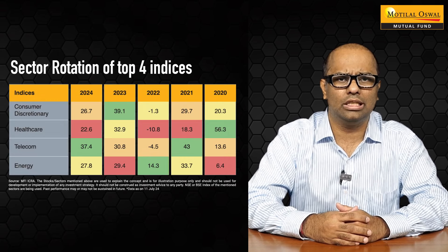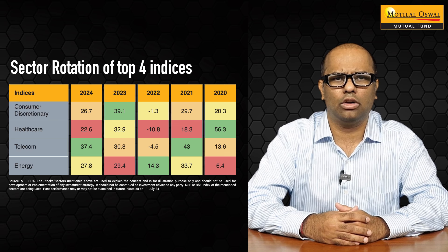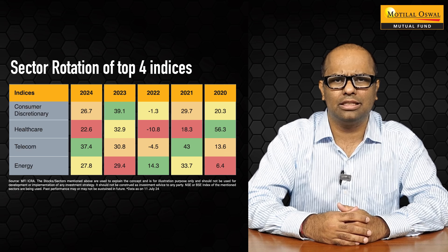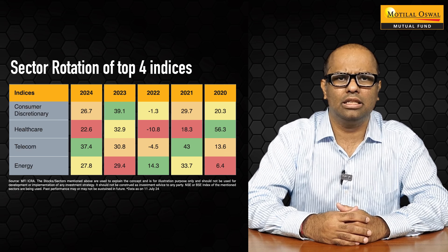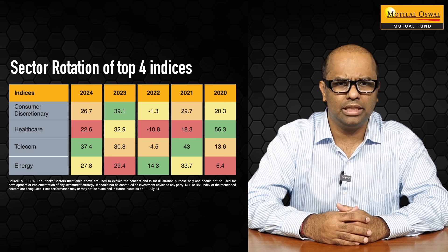Why should one consider business cycle investing? Historically, it has been observed that no sector performs the best during consecutive calendar year periods. Also, the worst performing sector keeps changing every year. This indicates that sector rotation is necessary to generate alpha. Hence, understanding the right period before and after the growth phase of a sector is important to generate the maximum benefit out of the investment and exit from it. This type of allocation, which benefits from the growth of sectors expected to perform better during a certain cycle, is called business cycle investing.